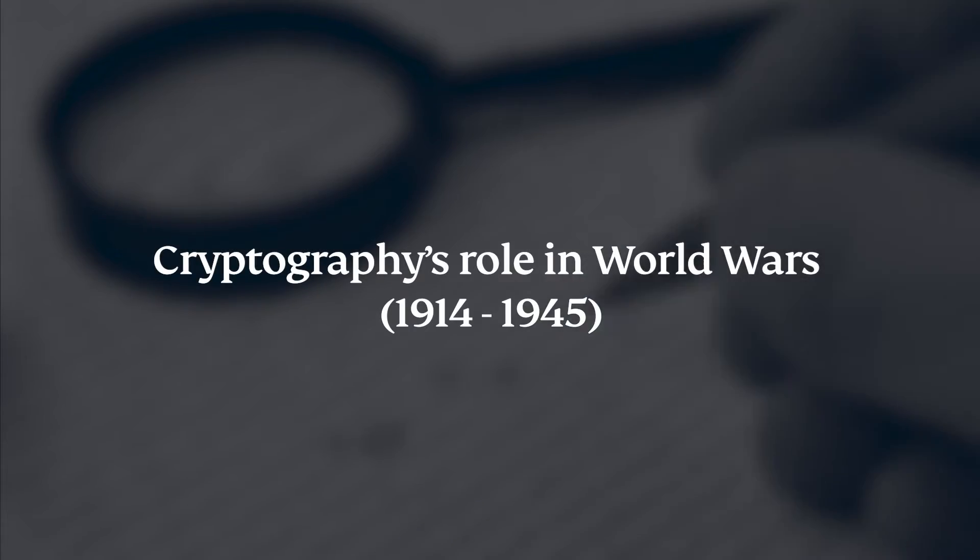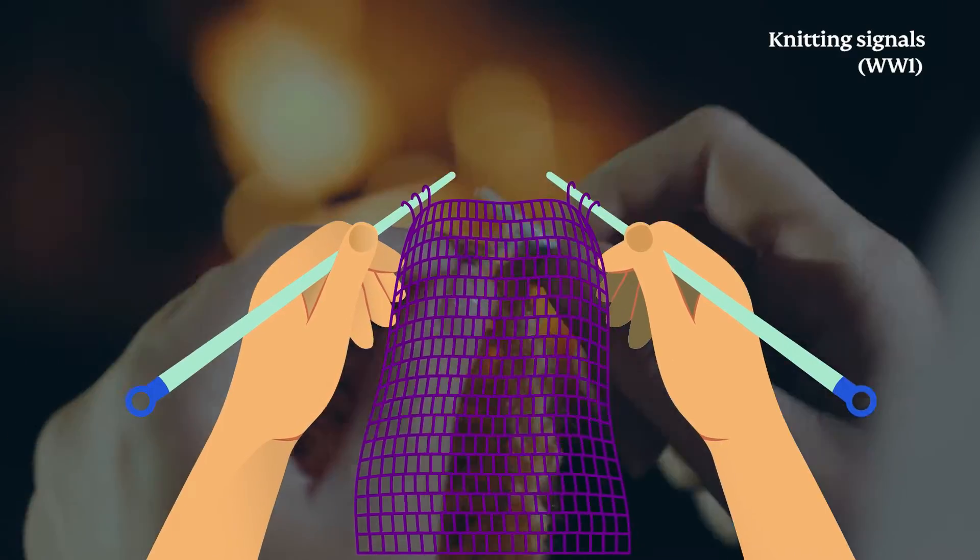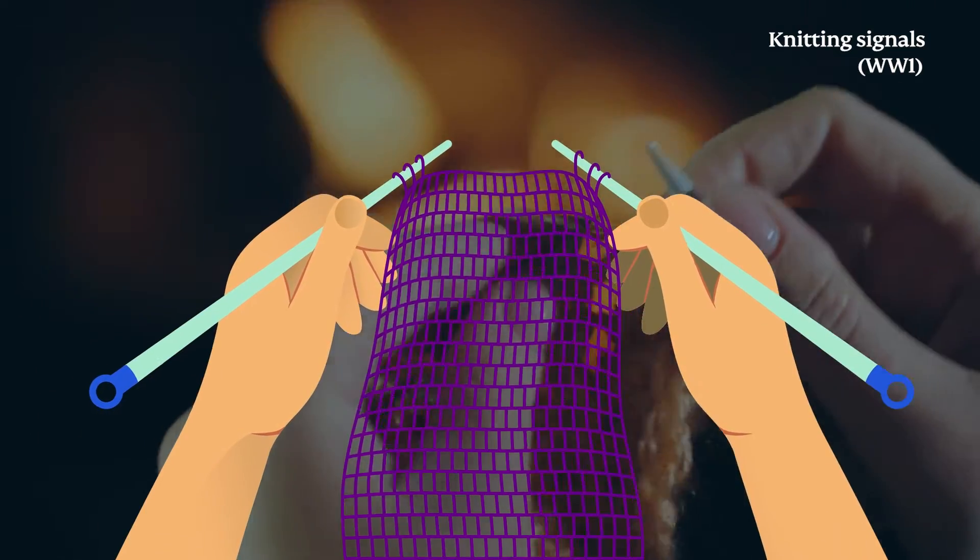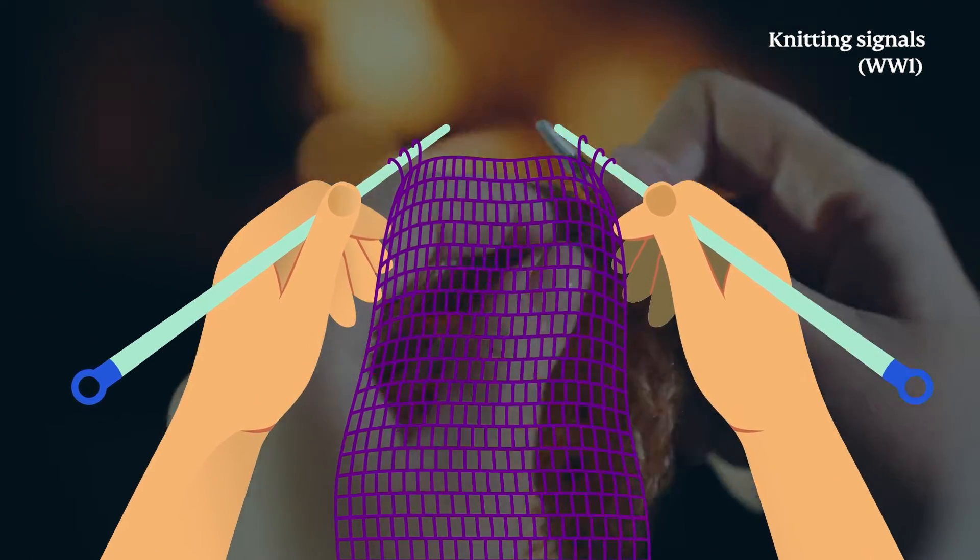Cryptography's role in world wars. Knitting became an espionage tool in World War I for signaling trains. In World War II, knitting patterns were banned due to security concerns.